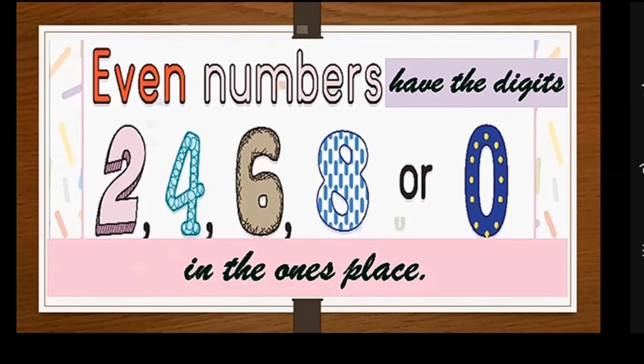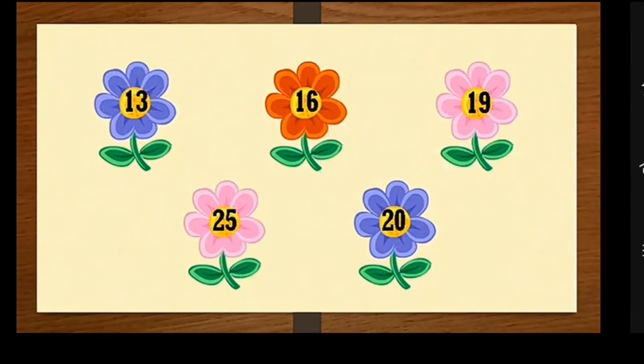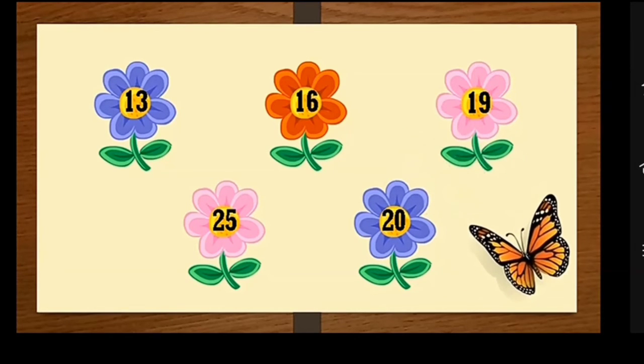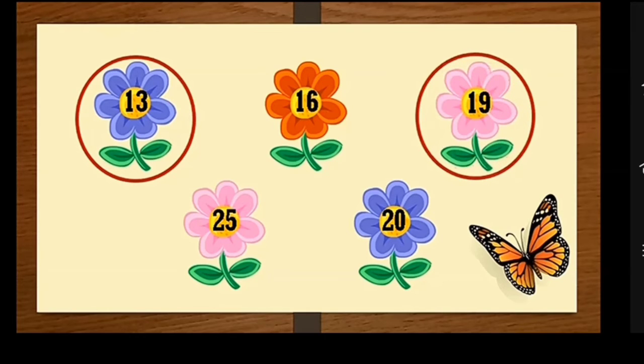Dear children, look at these lovely flowers. A butterfly at the corner is waiting. The butterfly wants to go near only odd number of flowers, so let's circle them for the butterfly. Start: 13, yes exactly, 19, and 25 are odd numbers.